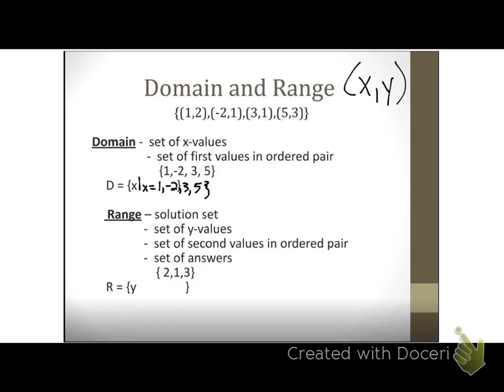Once again, we can use set builder notation. R stands for range. So my range equals my set of all real numbers Y such that Y equals 2, 1, 3. Domain is my set of X values. Range is my set of Y values.